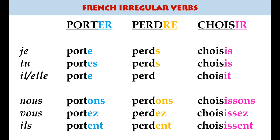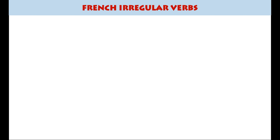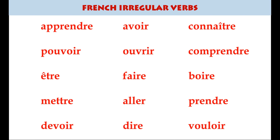Our starting point is this familiar table of regular verbs — the three patterns: er, re, and ir verbs. I've put them in different colors so that when patterns emerge you'll recognize which of the three groups they fit in. From this point on we'll go through 15 very useful, common irregular verbs that you will need to know.